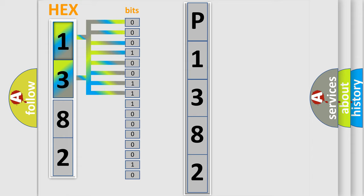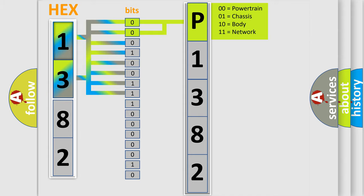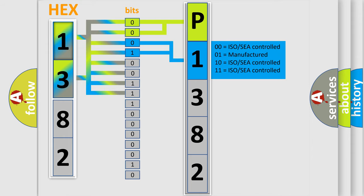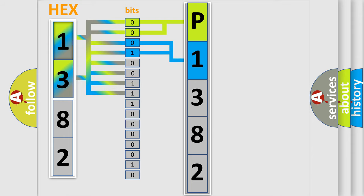Zero — low level. One — high level. By combining the first two bits, the basic character of the error code is expressed. The next two bits determine the second character. The last bits of the first byte define the third character of the code.